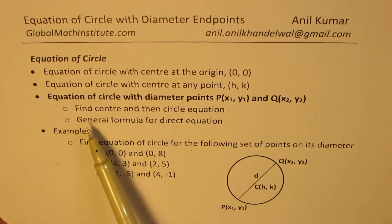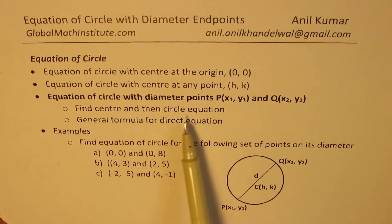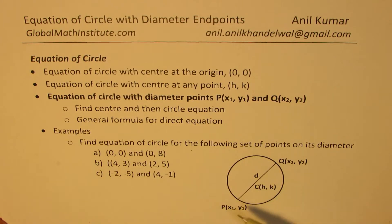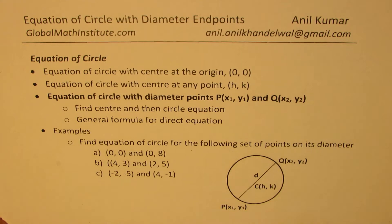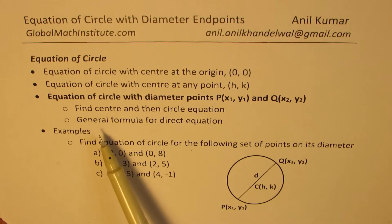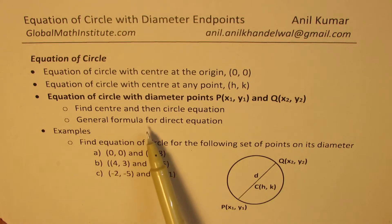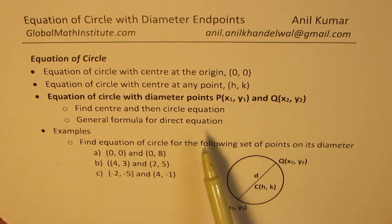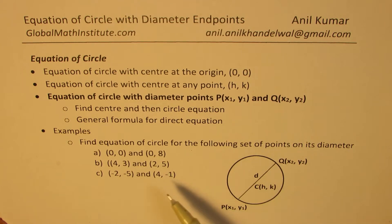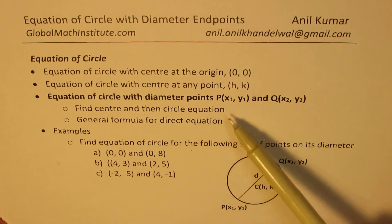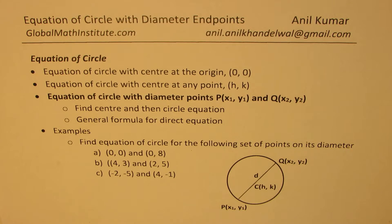One method will be to find the center and then the equation of the circle. If I find the center, which is the midpoint, I can use the equation knowing any point and the center to find the equation of the circle. The second way is to figure out a general formula for direct calculation. Once we do that, we'll take up three examples using these methods.